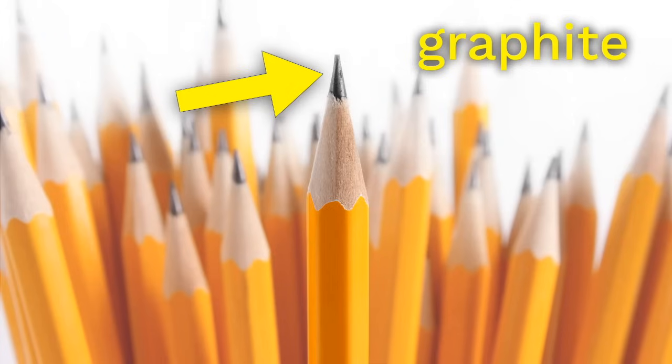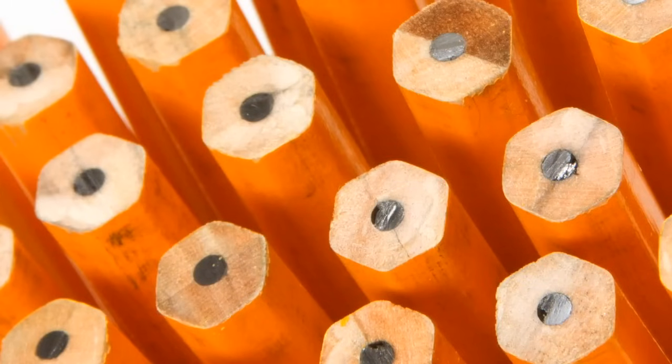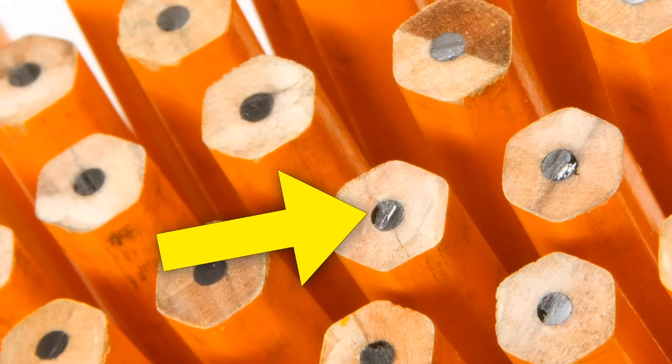We don't know for sure who invented the pencil, but whoever did it must have been really clever. I mean, think about it. Look at this picture of a bunch of unsharpened pencils. How do they get the graphite inside of the wood like that? I mean, what do they do? Do they carve these long pieces of wood and then drill a tiny hole through the middle?